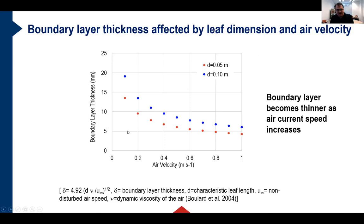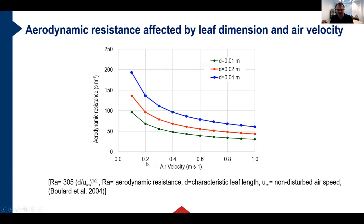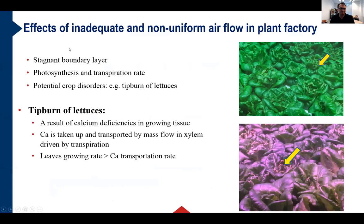Aerodynamic resistance is also reduced as air current speed increases in the boundary layer. Stagnant boundary layers can cause issues with transpiration rates and lead to potential crop disorders. Inadequate and non-uniform airflow in crop production spaces has direct negative effects on crop performance.